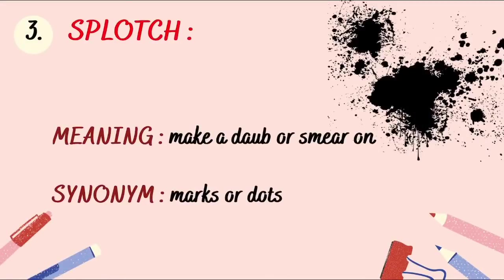The next vocabulary is 'splotch.' Splotch means to make a dab or smear, especially with a liquid. Through the picture you can see what kind of smearing or dabbing is a splotch — that kind of mark or dot is a splotch. Synonym: marks or dots. It also means a dot, mark, or a certain kind of splotching mark made with a liquid. It is especially used for liquid.